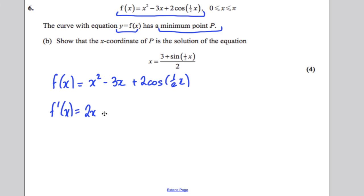That would be 2x subtract 3 and differentiate. You differentiate the inside, which would be a half, 2 times a half is 1. The differential of cosine is negative sine. So this would be negative sine of a half x. Give yourself a chance, you're going to need this later, to write this down.